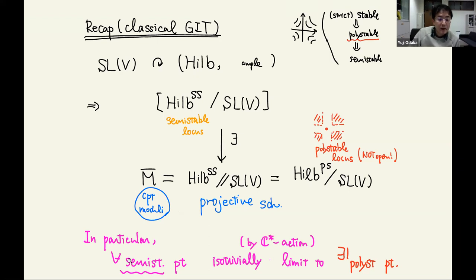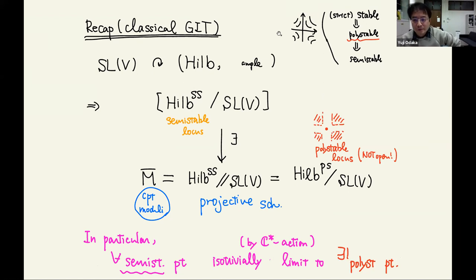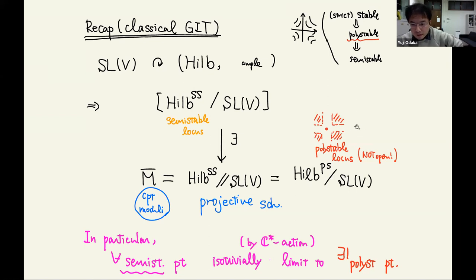Here is an example picture. C* acts on C^2. The semi-stable locus is the whole affine piece. The polystable locus consists of the quadrants and the origin. If you take a point around the x-axis, it isotrivially degenerates to a polystable point. So any semi-stable point isotrivially limits to a polystable point — this is a basic phenomenon in classical GIT.